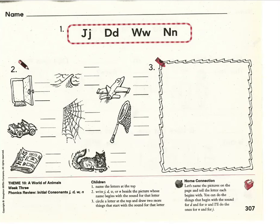Let's practice our language skills. Please take out your red language skills packet and open up to page 307. We're going to be reviewing some letters and their sounds. Let's start by writing your name and number at the top of your page. Please make sure you write one capital letter at the beginning and everything else in lowercase. Let's review the sounds that these letters make.